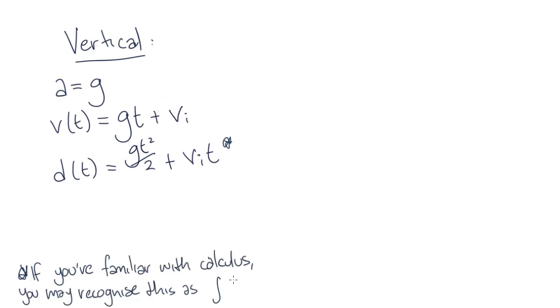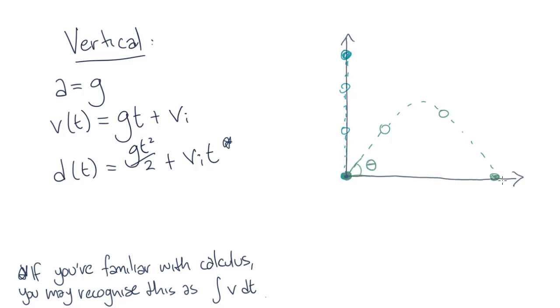But what about when we throw the treat at an angle? Well, we know that our horizontal and vertical axes are independent, so in the vertical direction, it doesn't matter what is happening in the horizontal direction, because it won't affect our vertical motion. So am I saying that we already have the equations for our vertical motion? Exactly!